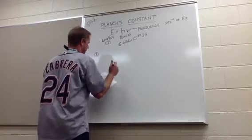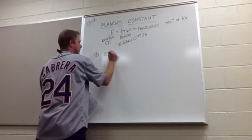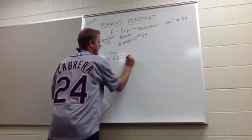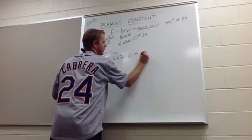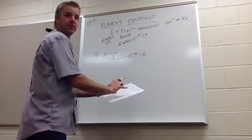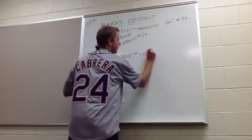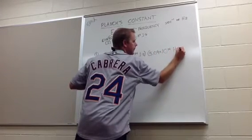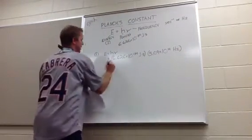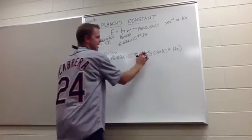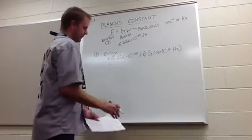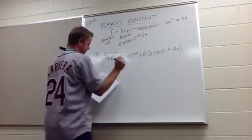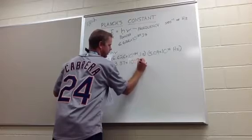So E equals HV. This is equal to 6.626 times 10 to the negative 34 joule-seconds times the frequency given in the problem, which was 5.09 times 10 to the 14th hertz. When you go to do the math on this, you have multiplication rules, and you get 3.4 times 10 to the negative 19th joules.